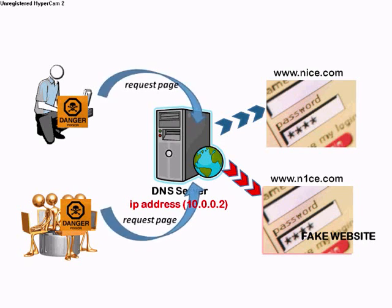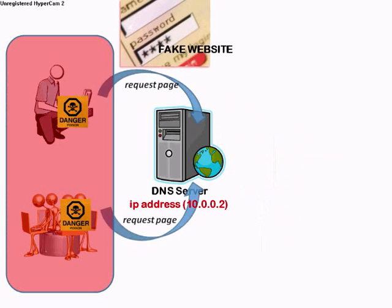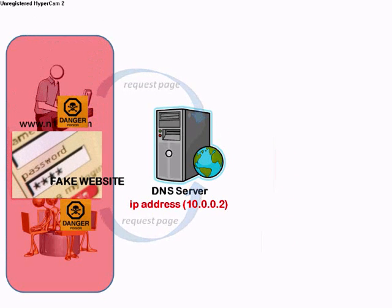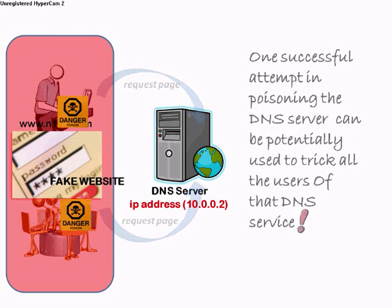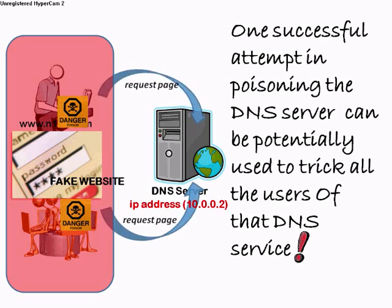Once the attacker has managed to get users to visit the fake website, there are many ways in which the user can be tricked into revealing their credentials or giving out personal information. The beauty — or rather the infamy — of farming over phishing is evident from the fact that one successful attempt in poisoning the DNS server can potentially be used to trick all the users of that DNS service.